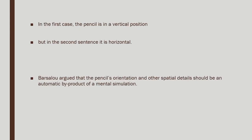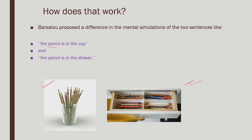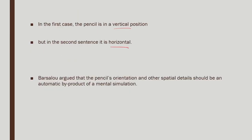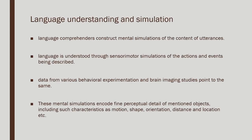As per Barsalou, the orientation of the pencil is an integral part of comprehending the two sentences differently. We understand the sentence because we know what it refers to, and this understanding takes into account the relative orientation of the pencil. He argued that a pencil's orientation as well as other spatial details should be an automatic byproduct of mental simulation. If you understand 'pencil in the cup,' you automatically simulate the vertical orientation.